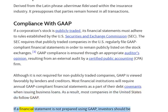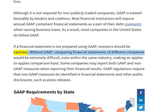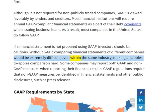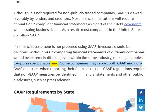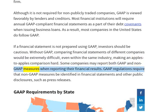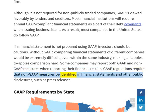If a financial statement is not prepared using GAAP, investors should be cautious. Without GAAP, comparing financial statements of different companies would be extremely difficult, even within the same industry, making an apples-to-apples comparison hard. Some companies may report both GAAP and non-GAAP measures when reporting their financial results. GAAP regulations require that non-GAAP measures be identified in financial statements and other public disclosures, such as press releases.